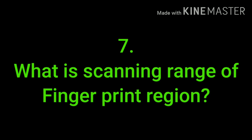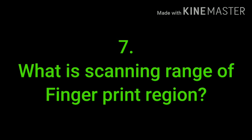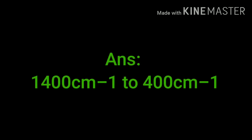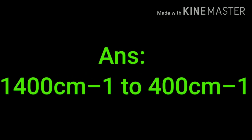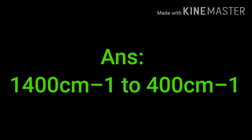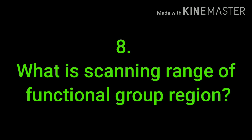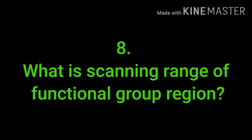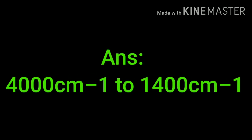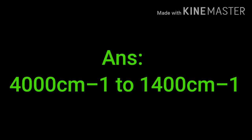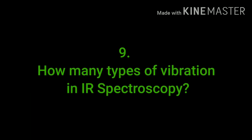What is the scanning range of the fingerprint region? The scanning range of the fingerprint region is 1400 cm⁻¹ to 400 cm⁻¹. What is the scanning range of the functional group region? The scanning range of the functional group region is 4000 cm⁻¹ to 1400 cm⁻¹.